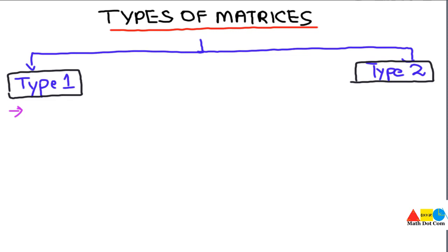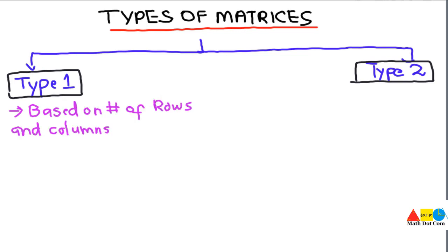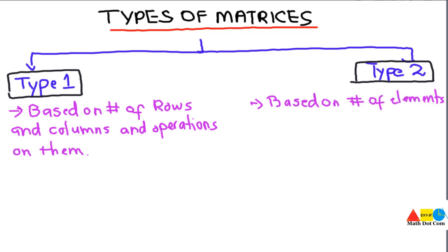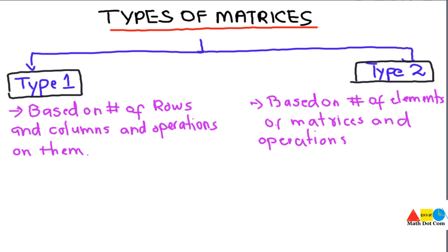Type 1 matrices are those categorized based on the number of rows and columns and operations on them. Type 2 matrices are those categorized based on the number of elements or entries of the matrix and operations on them. These are the two major types we have created for your ease. In mathematics there is no formal connection between Type 1 and Type 2 — we have done this only to help you memorize the many types of matrices.